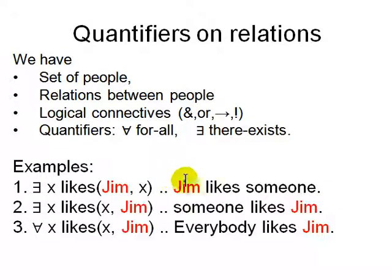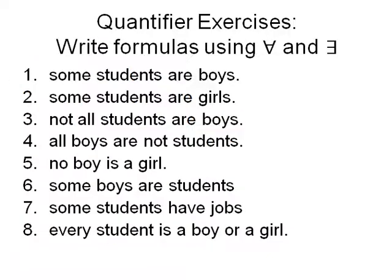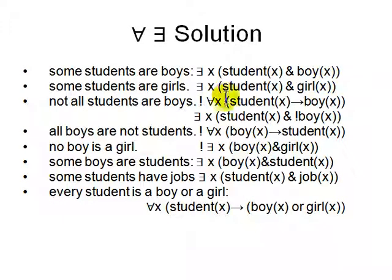Let's look at more complicated examples. We have a set of people, relations between people, logical connectors from propositional logic (and, or, implies, not), and quantifiers. There exists X such that Likes(Jim, X) means Jim likes someone. This is not the same as: There exists X such that Likes(X, Jim) — meaning there is somebody who likes Jim. And For all X, Likes(X, Jim) means everyone likes Jim. You can write things like: Some students are boys, some students are girls, not all students are boys, all boys are not students, no boys are girls, some boys are students, some students have jobs, every student is a boy or a girl — all using quantifiers and properties.